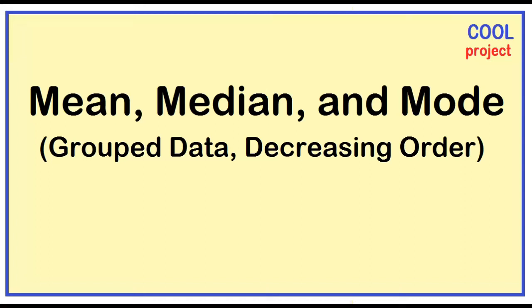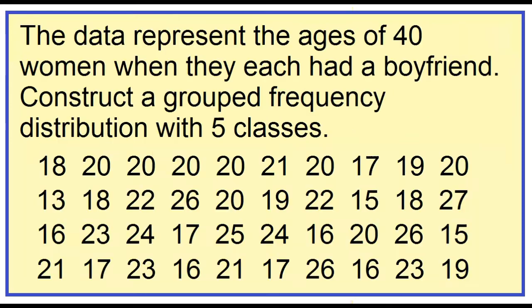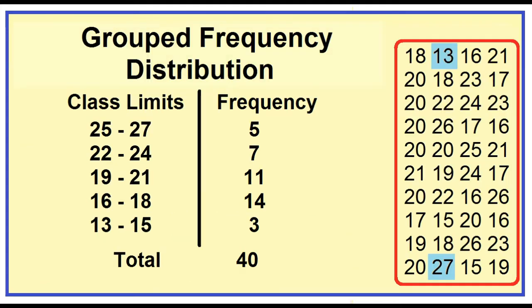How to find the mean, median, and mode given a group data in decreasing order? The data is all about the ages of 40 women when they each had a boyfriend. Based on the group data, find the mean, median, and the mode.